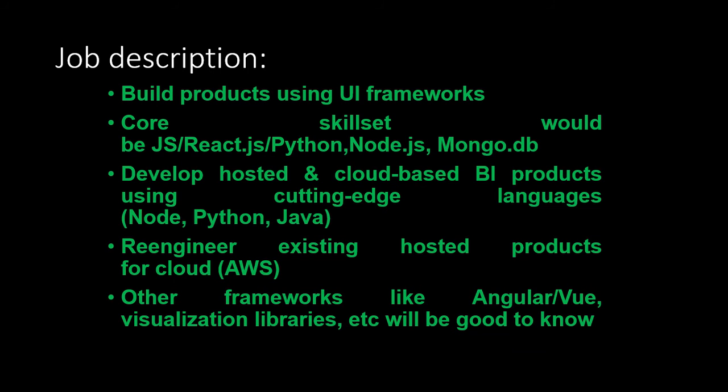Build products using UI frameworks. Core skillset could be JavaScript, ReactJS, Python, NodeJS, and MongoDB. Develop hosted and cloud-based BI products using cutting-edge languages like Node, Python, and Java. Re-engineer existing hosted products for cloud AWS. Other frameworks like Angular, Vue, and visualization libraries will be good to know.